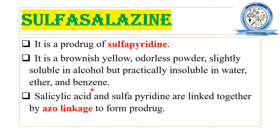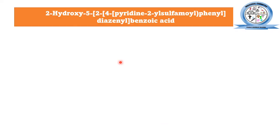Sulfasalazine is practically insoluble in water, ether, and benzene. Basically, sulfasalazine is a product in which two different derivatives are combined — one is the salicylic acid derivative and the other is the sulfapyridine. Both are linked together by an azo linkage or azo bond to form sulfasalazine.